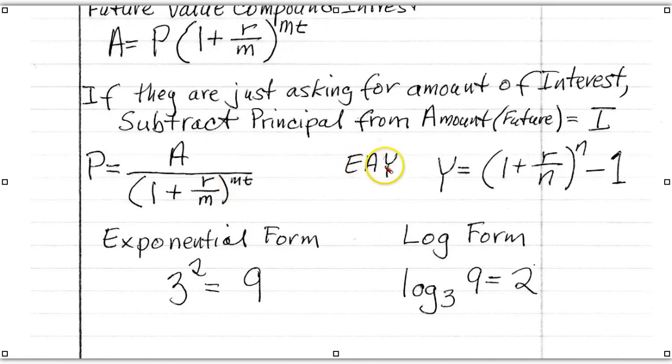Alright, the effective annual yield formula, that if something is 5% let's say, and they want to know what it would be if it were compounded quarterly, or semi-annually, or monthly, what would be? It would be larger than 5%, and this is the formula.